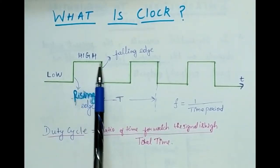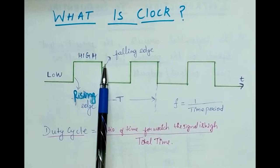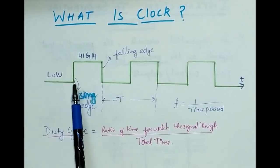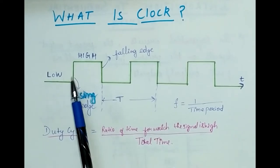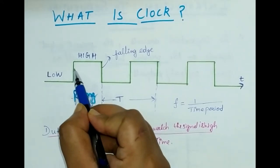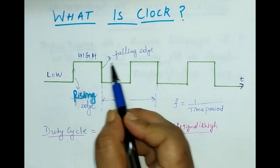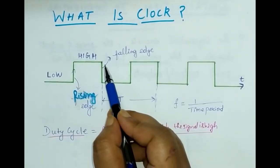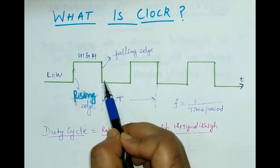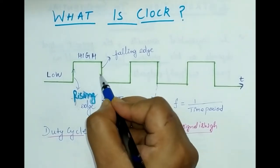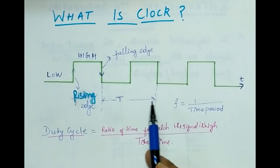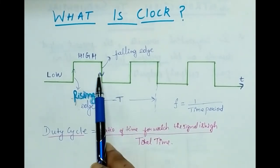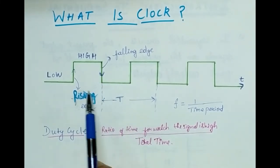This is the low level and this is the high level. When the signal is changing from low to high it is called the rising edge, and when the signal is changing from high to low it is called the falling edge. Now, what is the frequency of a signal?